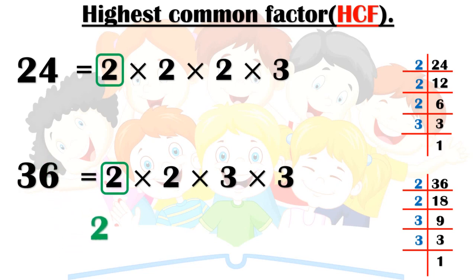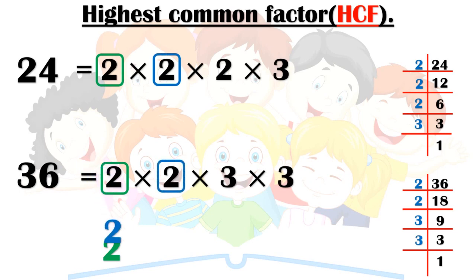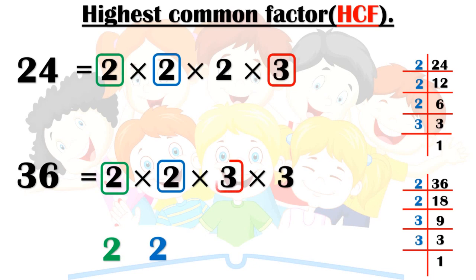Next, what is common? Here is 2, and 2. Next, 3. Next, 3. In these 7 factors, you can identify which are common — give the common factors first.